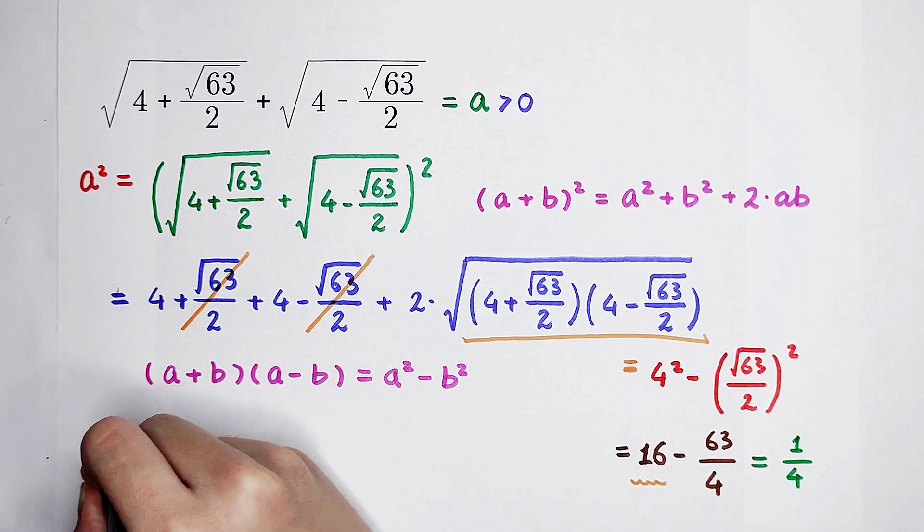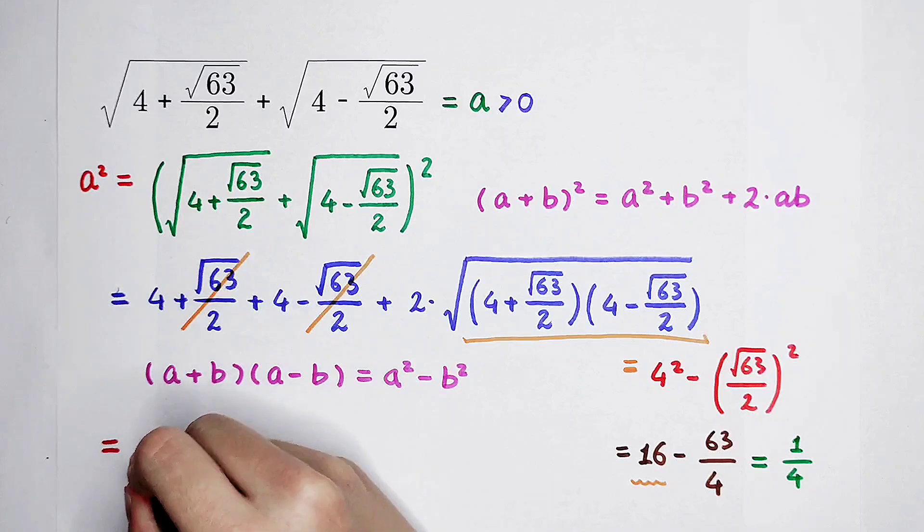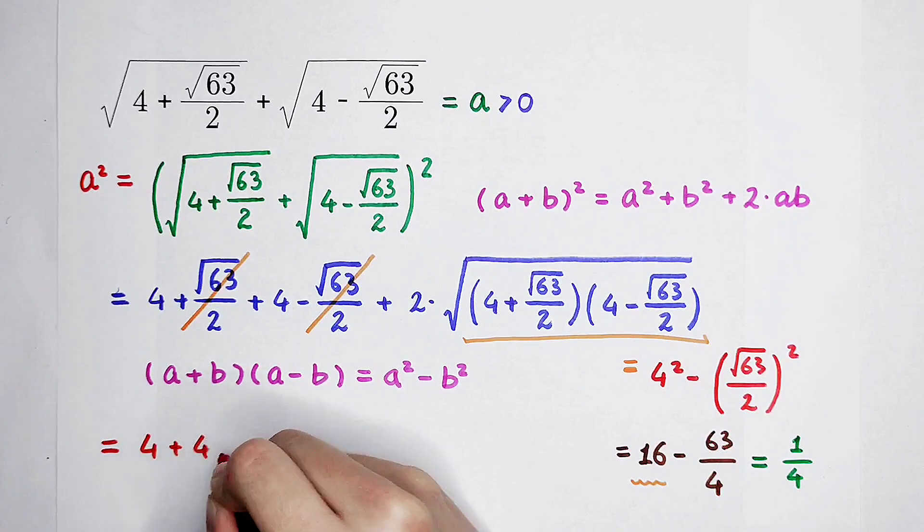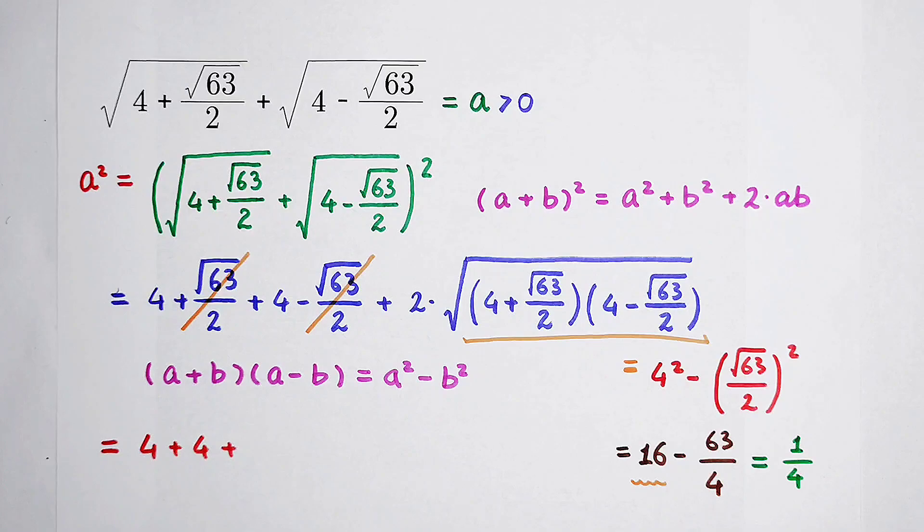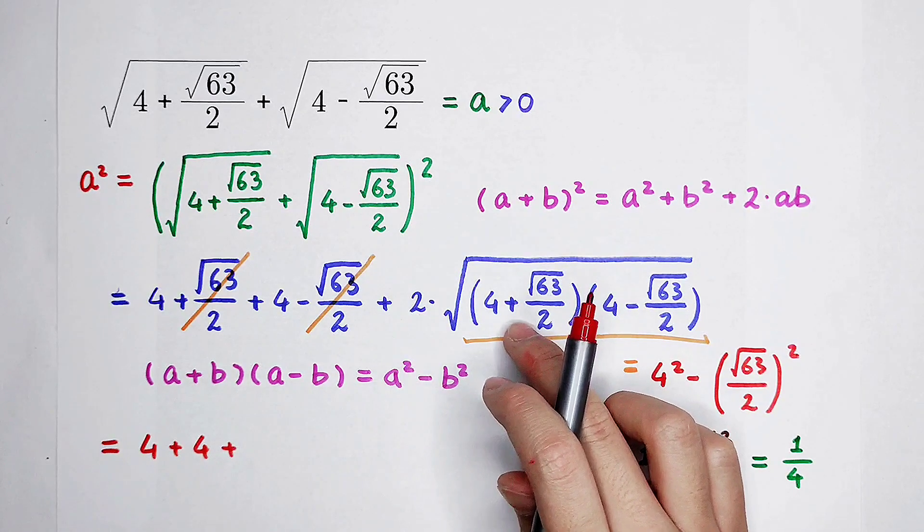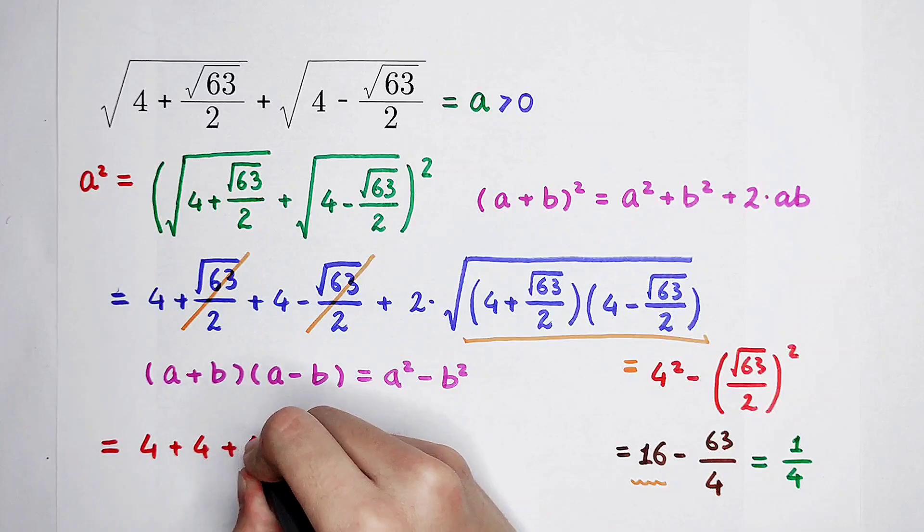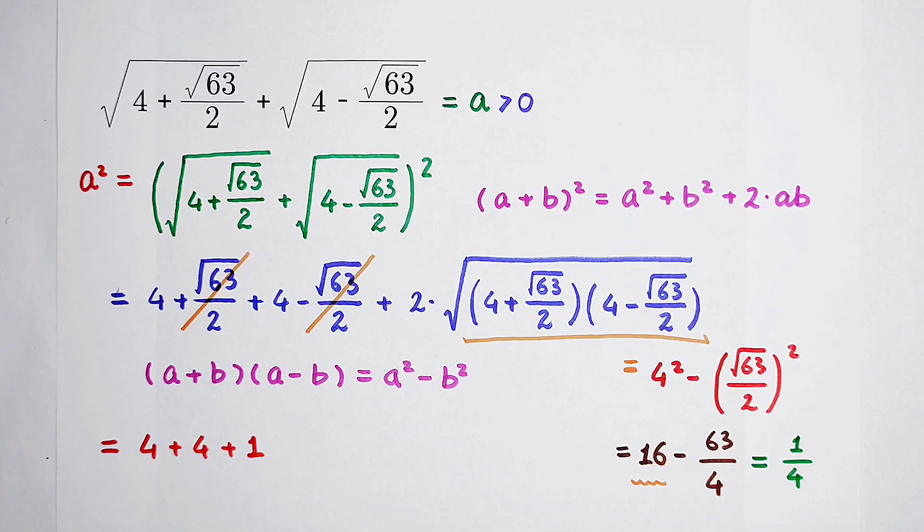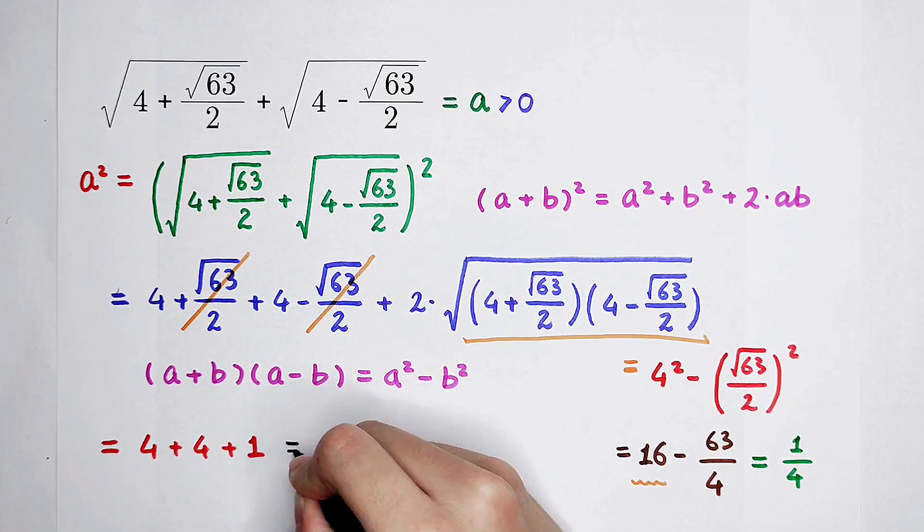So, next step: 4 plus 4 plus 2 times this, the square root of 1 fourth. If 1 fourth puts on a square root, then it should be 1 half. 2 times 1 half is 2 times 1 over 2, which is 1. 4 plus 4 plus 1, it is 8 plus 1, is 9. So, the value of a squared is 9.